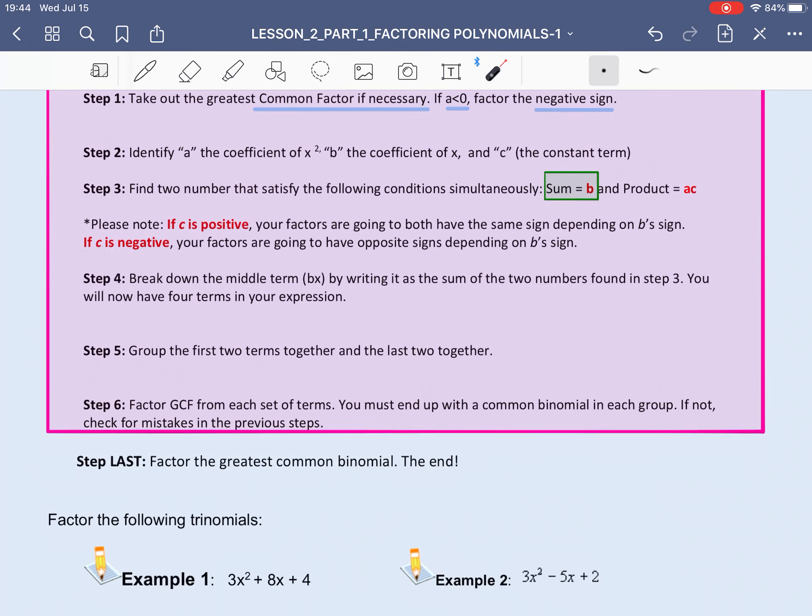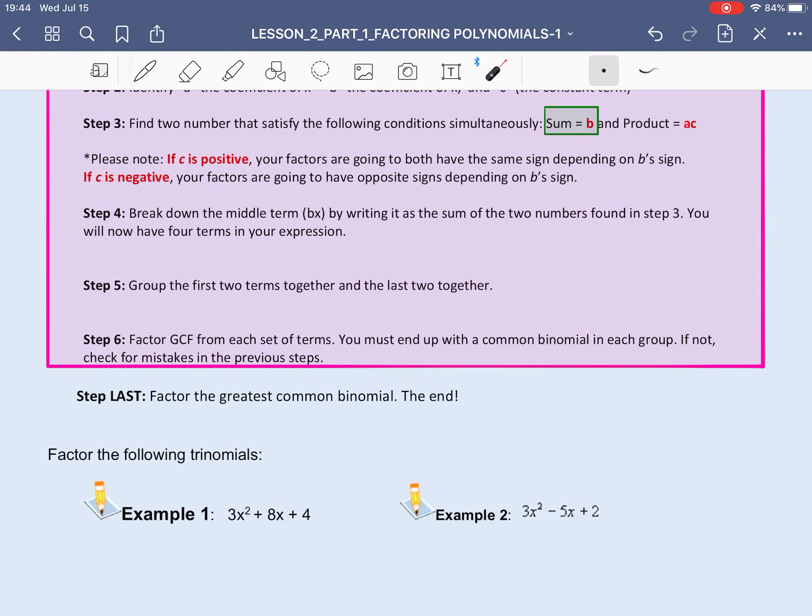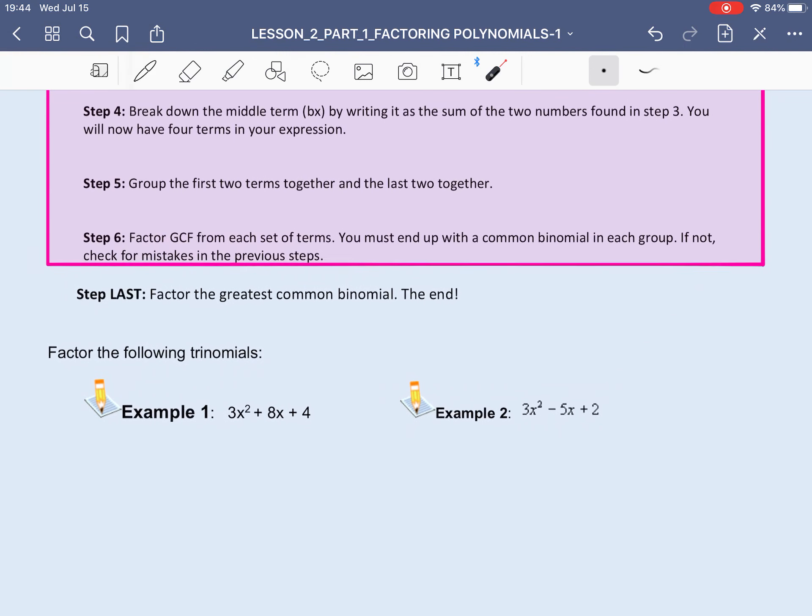And then we need to break down the middle term and factor afterwards. I prefer to go over the rest of the steps as we practice factoring this question. So we have 3x² + 8x + 4. I check for the greatest common factor, and I have none to take out.